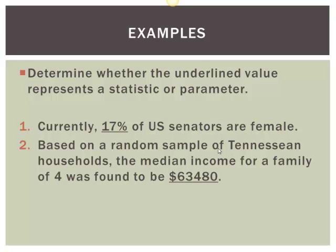What about this next one? Based on a random sample of Tennessean households, the median income for a family of four was $63,480 — pretty current as of 2010-2011. Well, that's a statistic, right? Random sample — we're looking at a random sample.